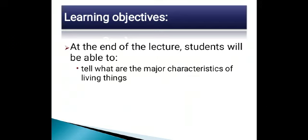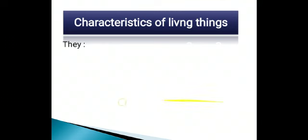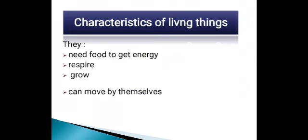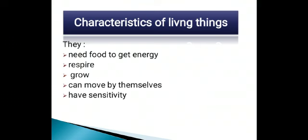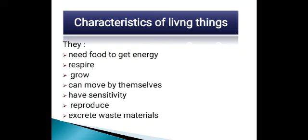There is a variety of living things on the earth. The question is: what does it mean to be alive, or what characteristics do all organisms have that make them different from non-living things? Here is a list of characteristics: all living things need food to get energy, they respire, they grow, they can move by themselves, they have sensitivity, they reproduce, and they excrete waste materials out of the body.